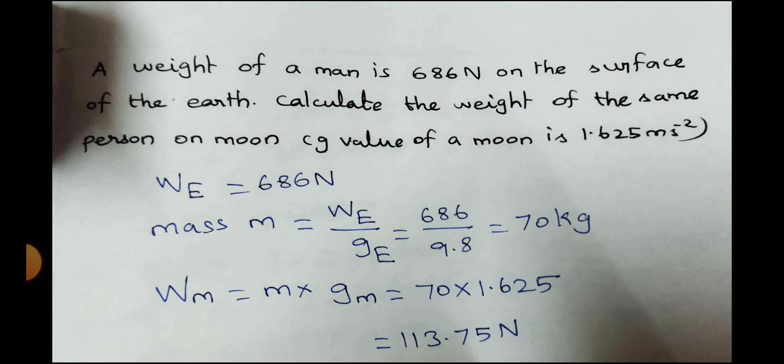So WM, the weight of the person in the moon, M into GM. GM is nothing but acceleration on the moon. So 70 into 1.625, 113.75 Newton.